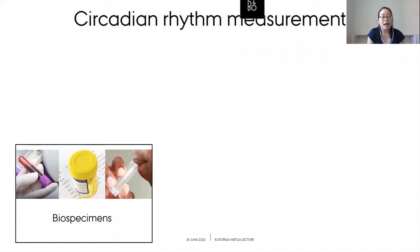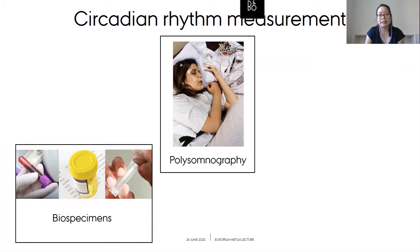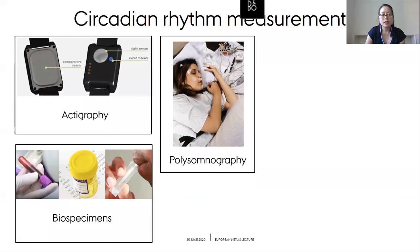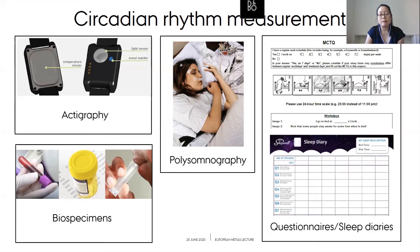One way to measure circadian rhythms is by taking specimens of blood, urine, or saliva to measure things like melatonin or cortisol levels — probably the most accurate method. Another way is through polysomnography, commonly used for sleep studies to evaluate sleep cycles and other physiological functions. A more convenient method is actigraphy — a watch-like device similar to a Fitbit — which measures hand movements, activity, skin temperature, and light exposure. Rhythms can also be measured using questionnaires and sleep diaries.